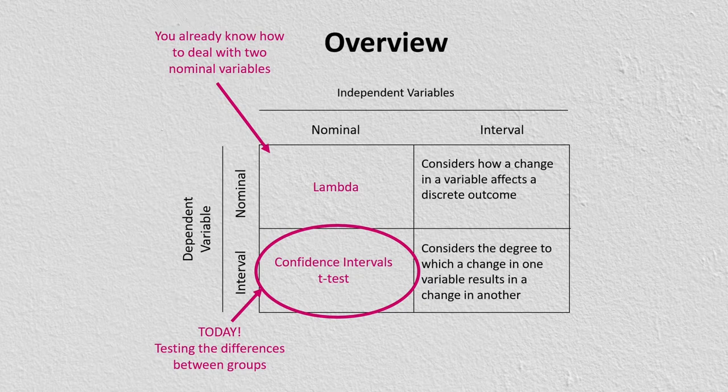When dealing with interval dependent variables and nominal independent variables, the key questions are: is one group scoring significantly higher on average than another? Is group A's mean higher than group B's? Do people in rural communities live longer than those in urban areas? Do students from private schools perform better in college than those from public high schools? Is the average tenure with an employer different for large firms versus those with fewer than 100 employees?